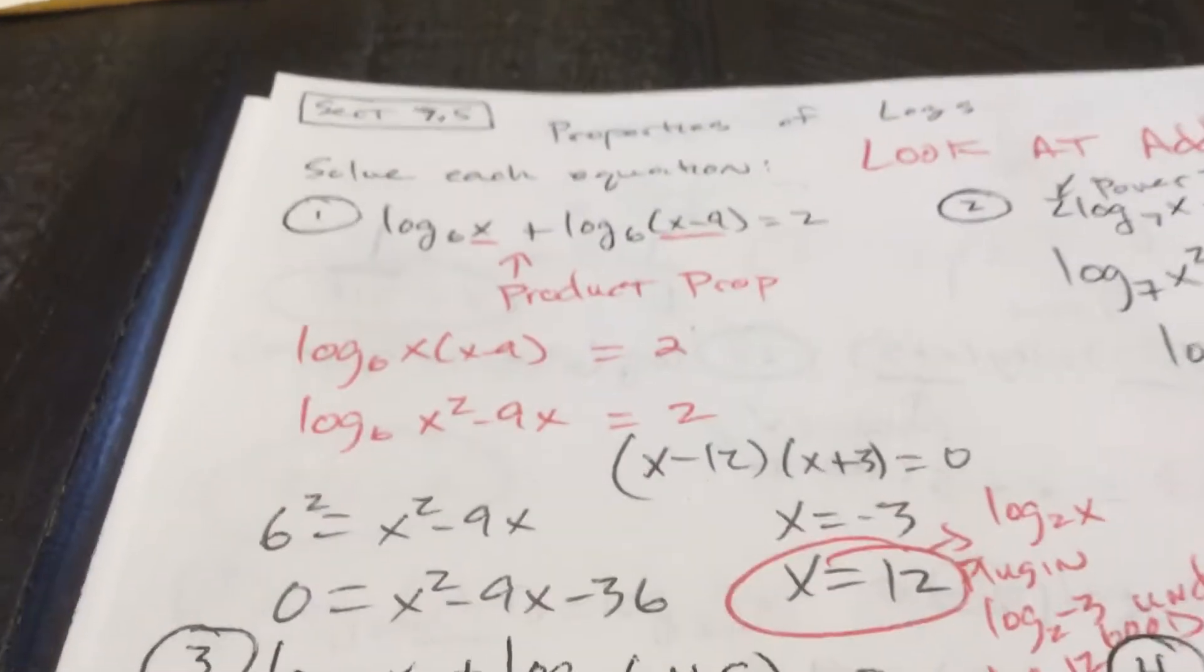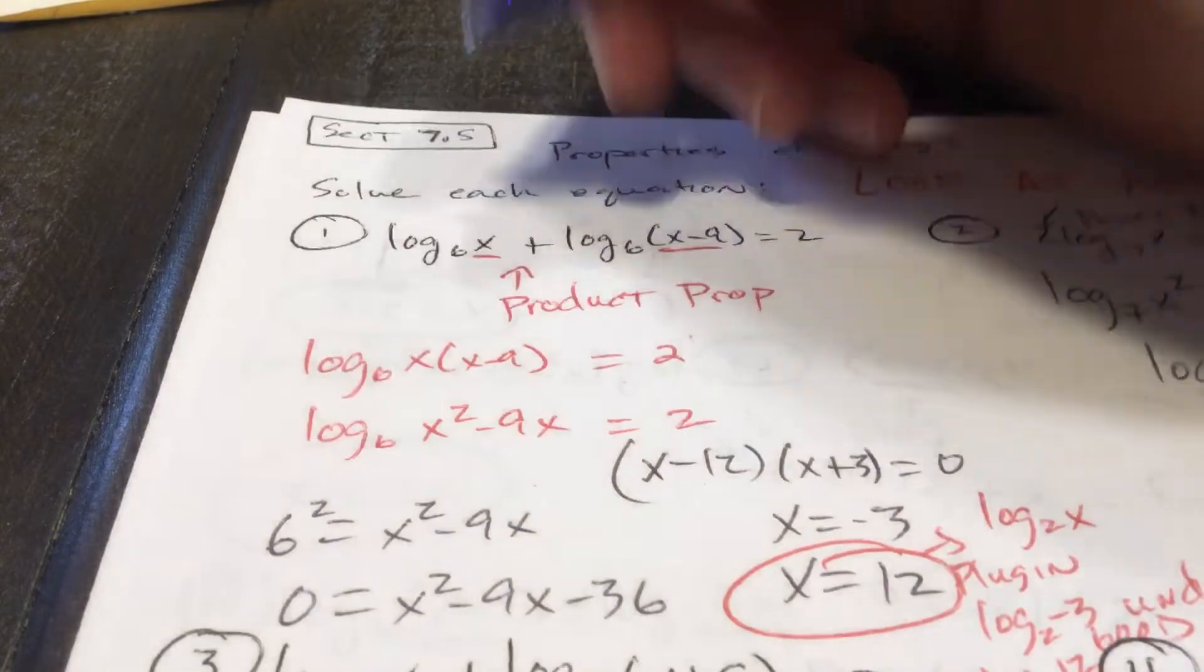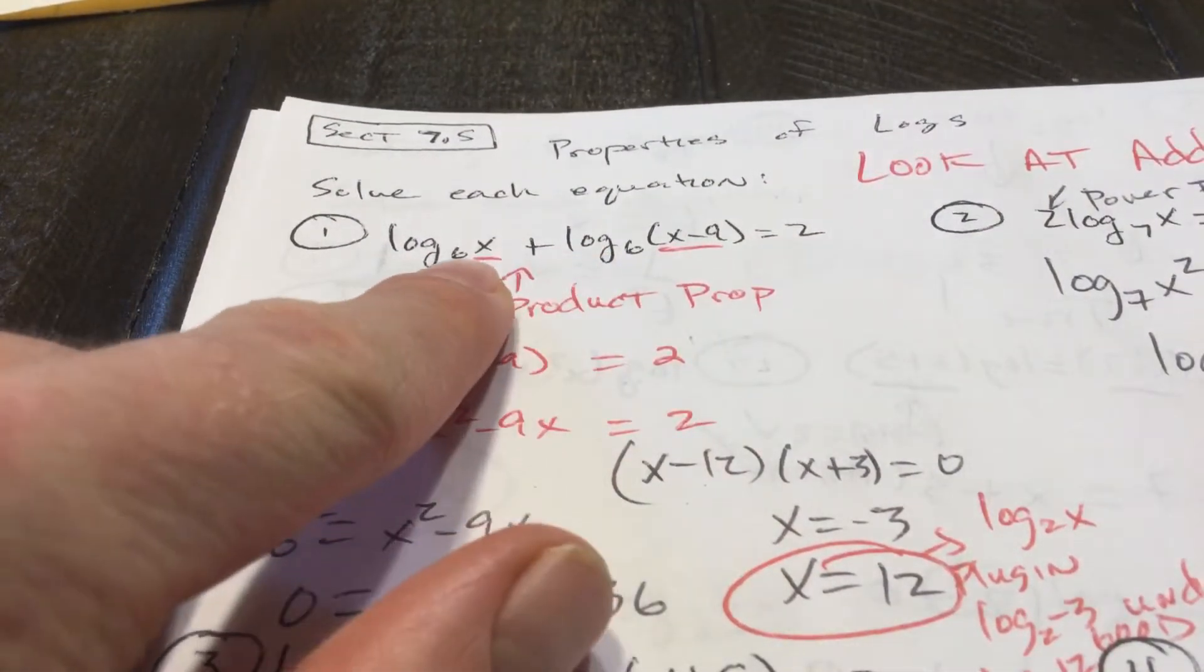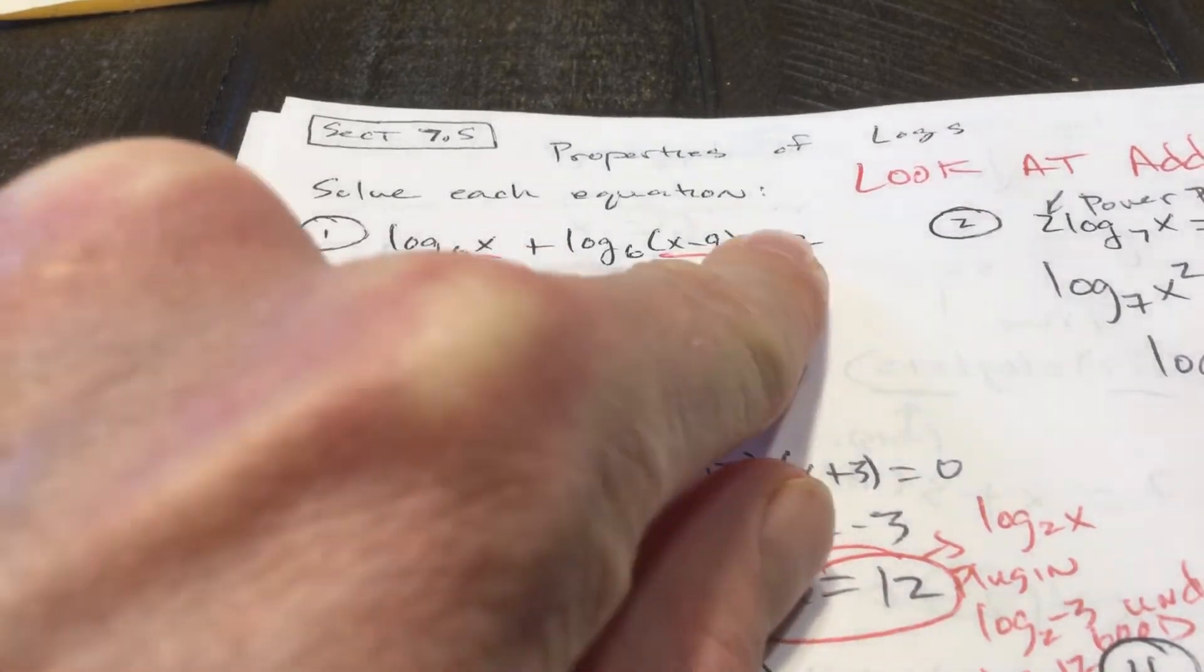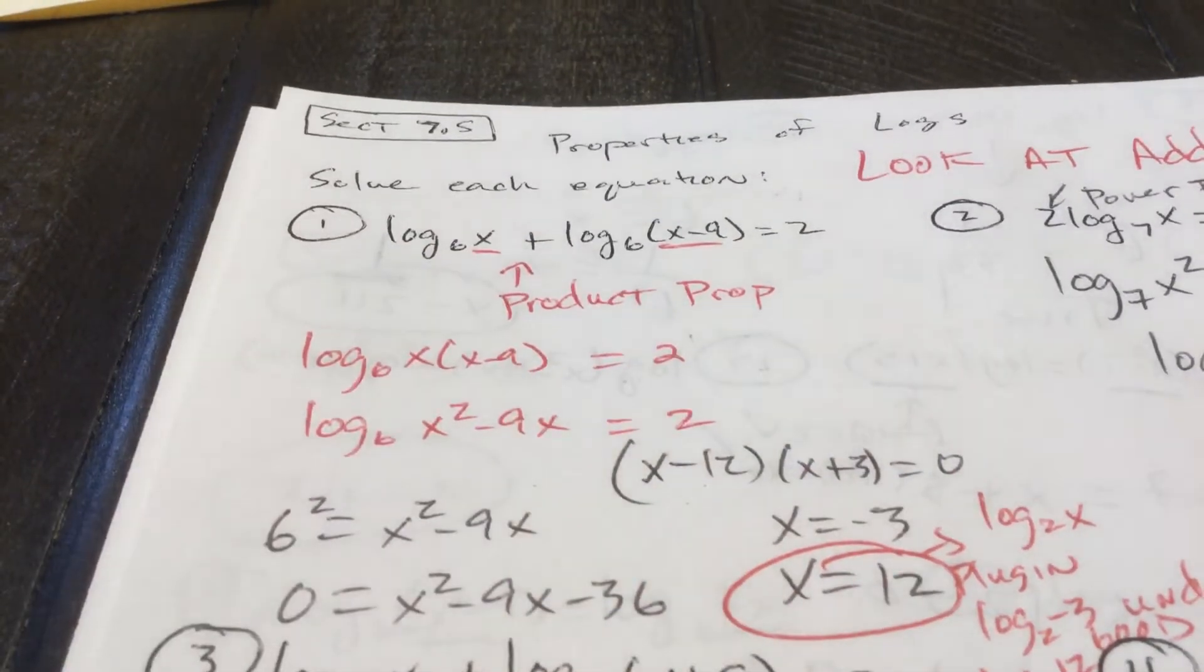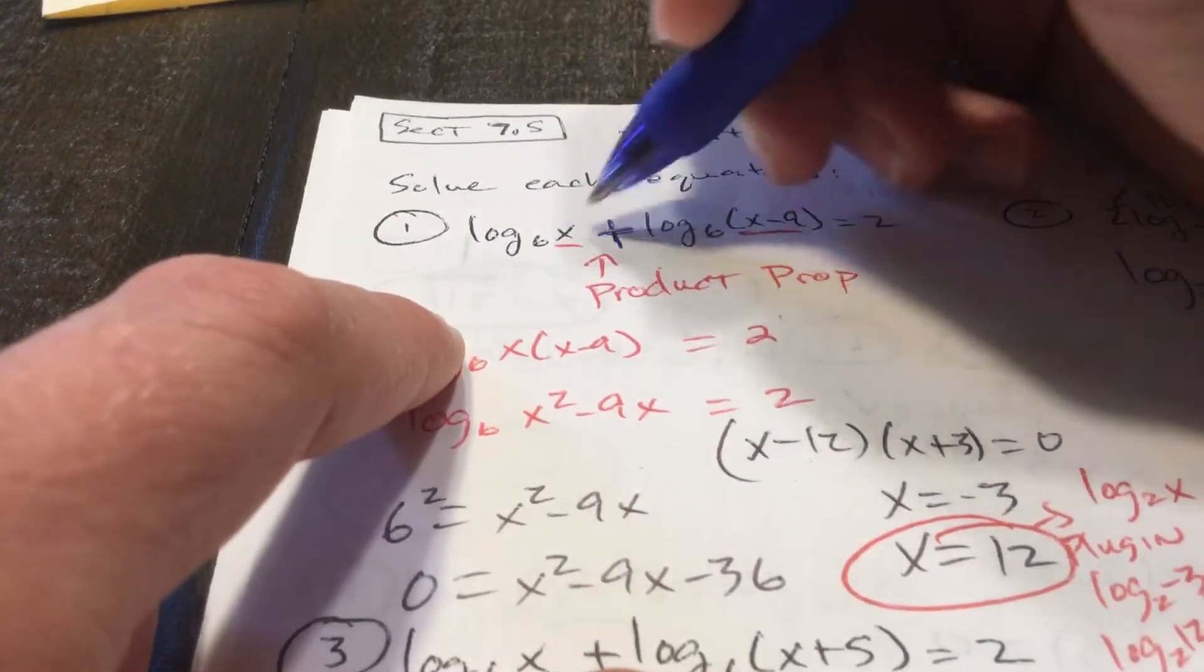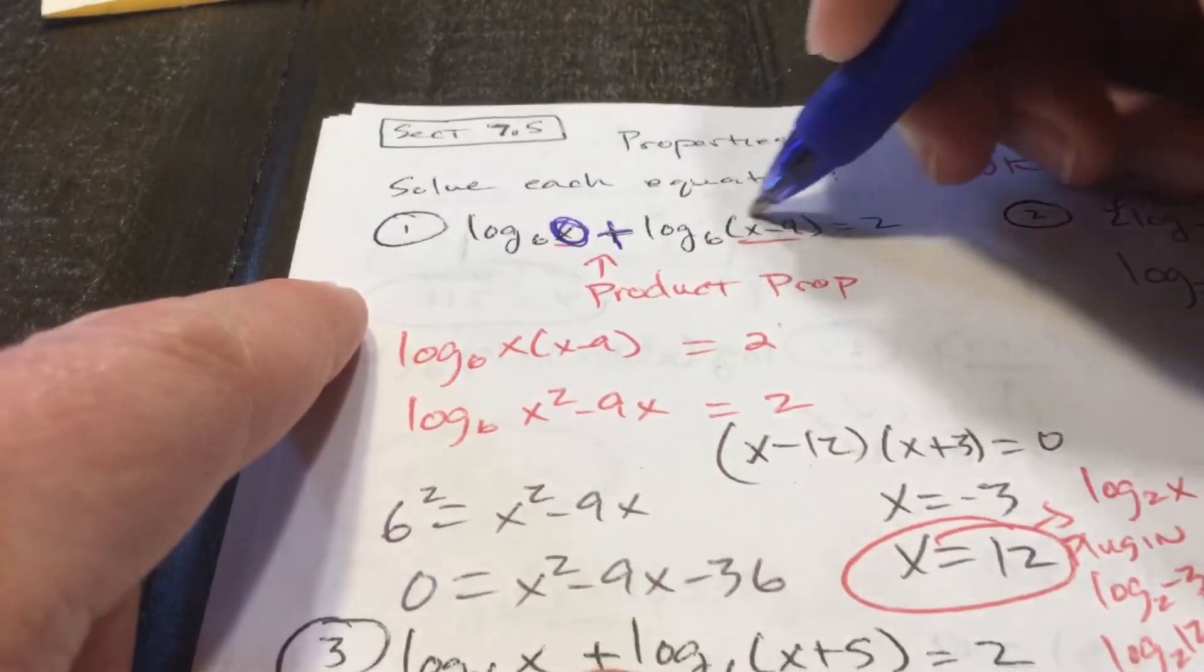All right, so here's what I'm going to do. And first off, everything is log base 6. This is not going to be x plus x minus 9 equals 2. I've got to combine these logs together. And in the log world, addition means multiplication. That is the product property.